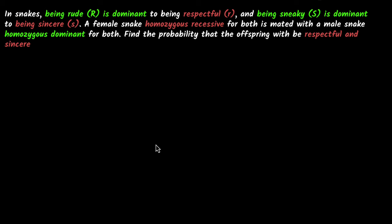Let's do one more. Why don't you pause the video and see if you can try this yourself first. Given snakes, being rude is dominant to being respectful. I need to tell you that this is a hypothetical example — it's not real that being rude or respectful has anything to do with genes. It's just a hypothetical example. And being sneaky is dominant to being sincere. What we're given now is a female snake which is homozygous recessive, mated with a male snake which is homozygous dominant for both.